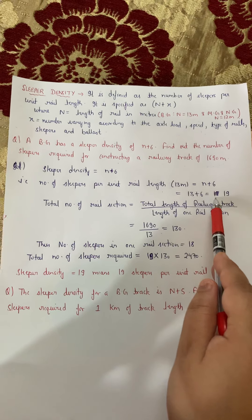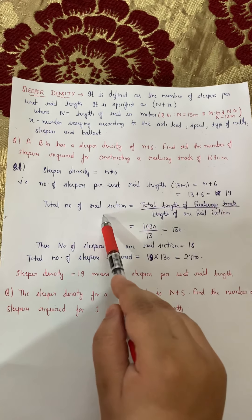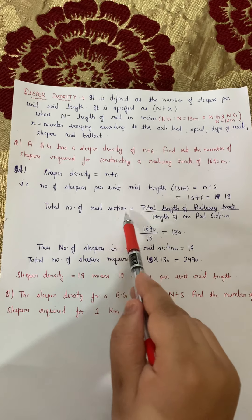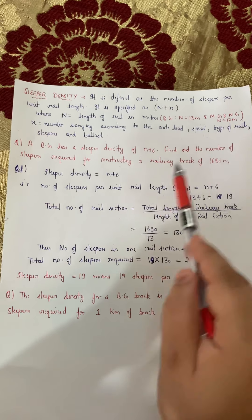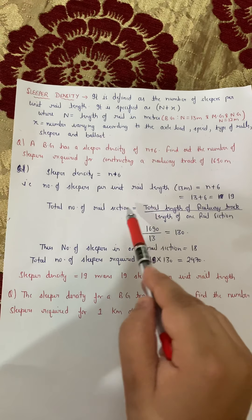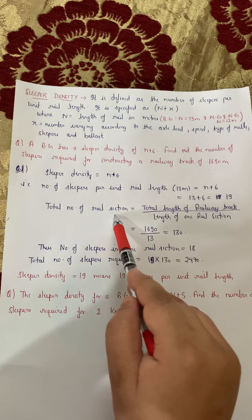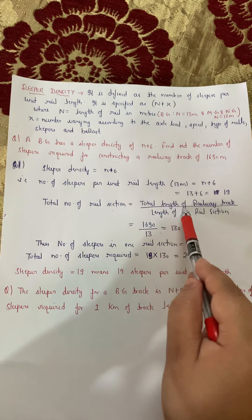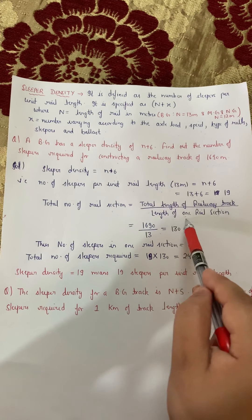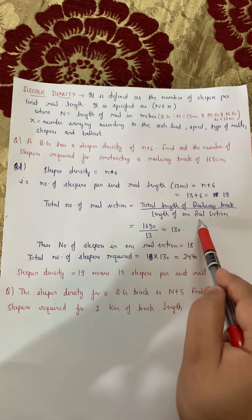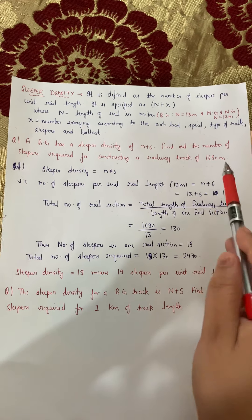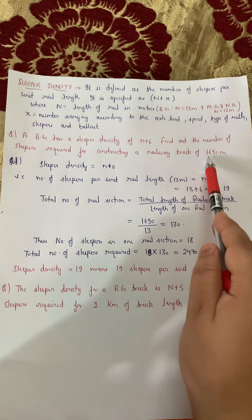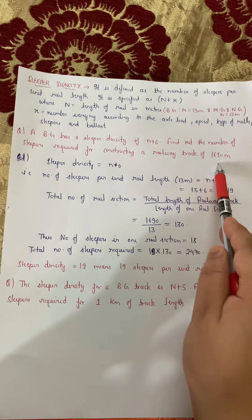X is a number that varies according to the axle load, speed, type of rails, sleepers, and ballast. X basically ek number hoti hai jo ki vary karta hai in different factors ke according. Generally, x ki value aapko question mein given rehti hai — sirf aapko n ki value put karni hoti hai.